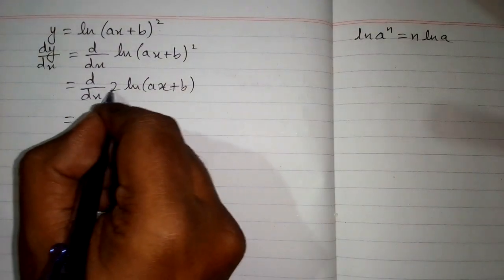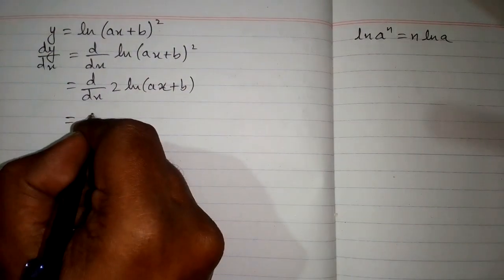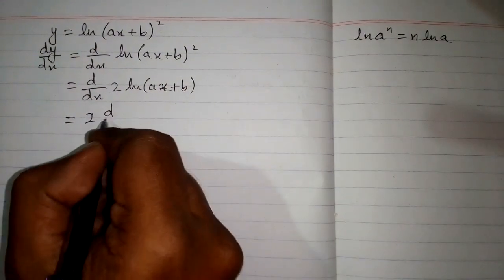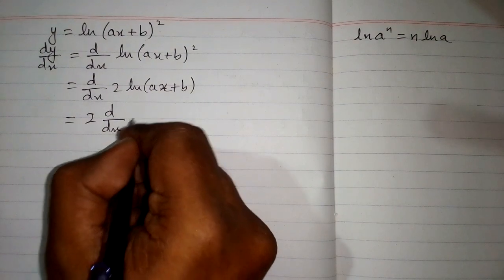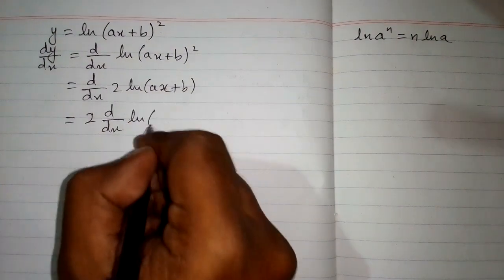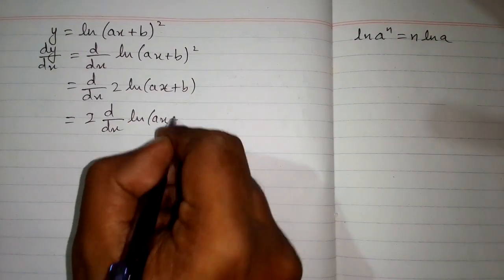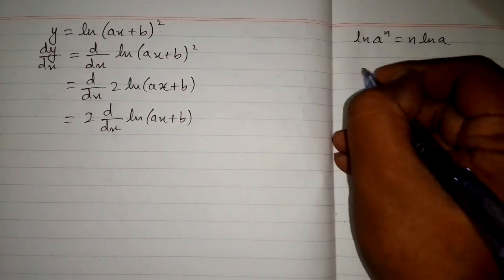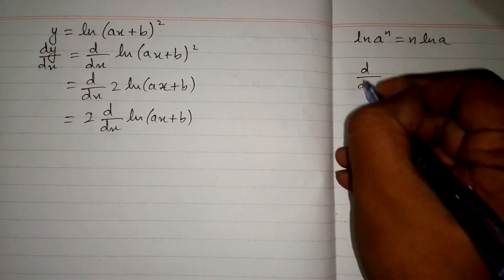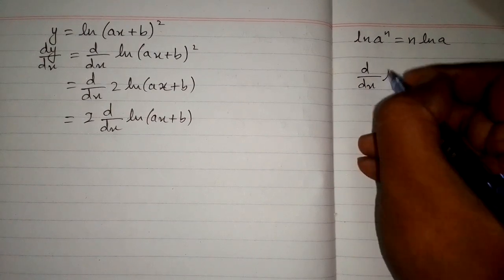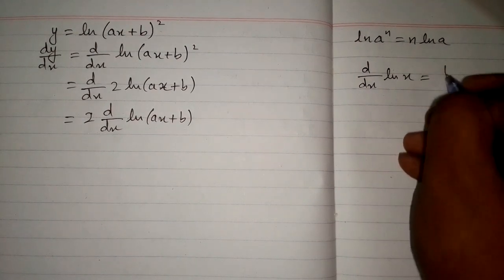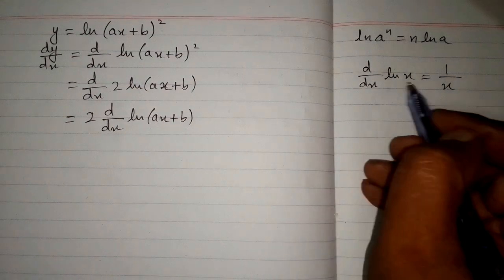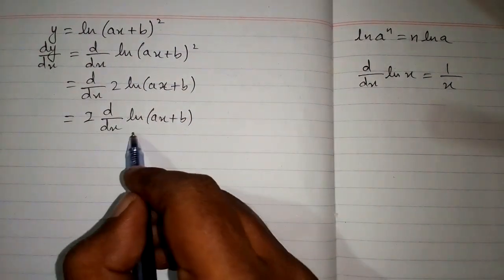We can write this 2 before the derivative, so we have 2 times the derivative of ln(ax+b). Now, the derivative of ln(x) is 1 upon x, and we can apply this formula here.